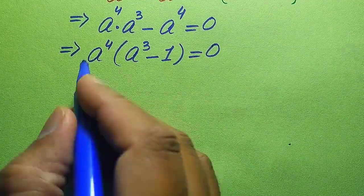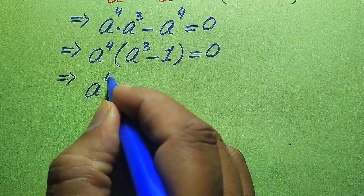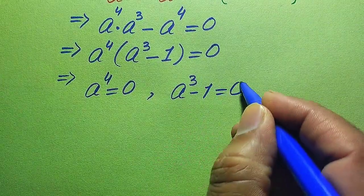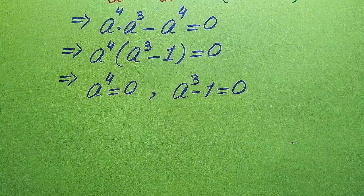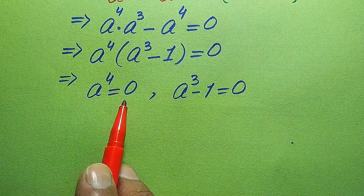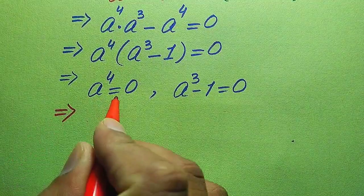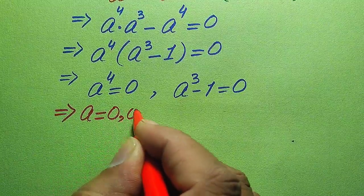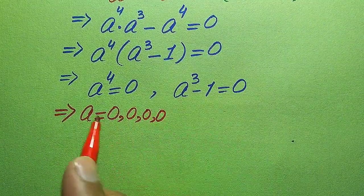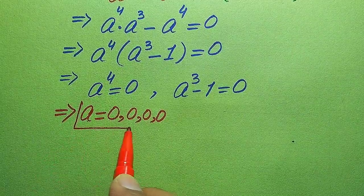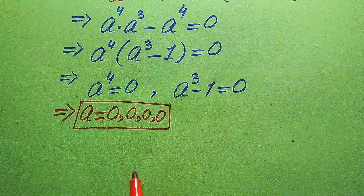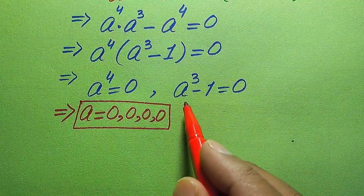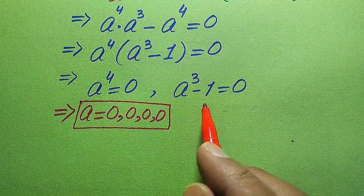In the next step we break this equation into two cases. The first case is a to the power of 4 equals 0, and the second case is a cubed minus 1 equals 0. From the first case, a to the power of 4 equals 0, which means this equation has 4 roots. So a equals 0, giving us four repeated equal roots as the first four roots of the given equation.